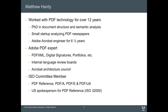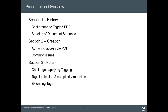So what am I actually going to talk about? I want to address the history of Tagged PDF, clarify some understandings, and discuss why we care about document semantics. I then want to talk about creation — how you approach creating Tagged PDF at a technical level, not so much at the semantic level since Dev already covered that — and some common issues we see. Then I want to talk about the future of this material and how we're trying to address challenges in the space of document semantics.